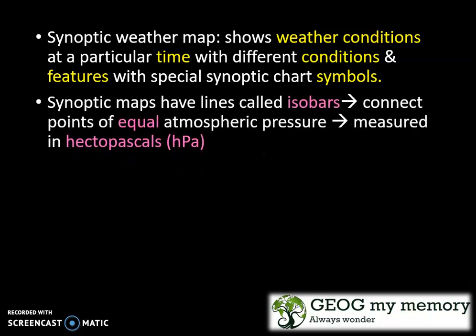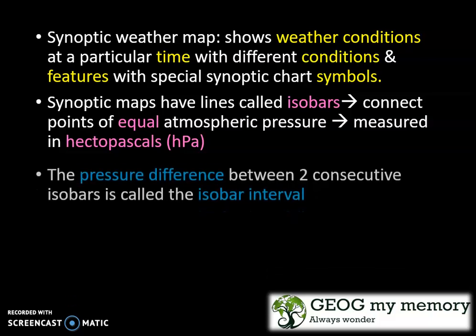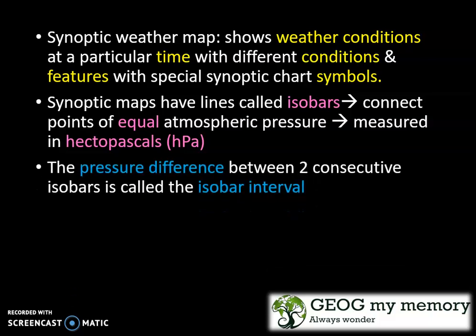Synoptic maps have lines called isobars. These isobars connect points of equal atmospheric pressure and are measured in hectopascals. The pressure difference between two consecutive isobars is called the isobar interval.